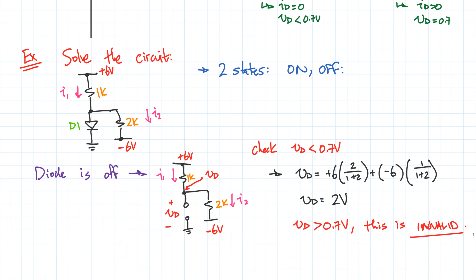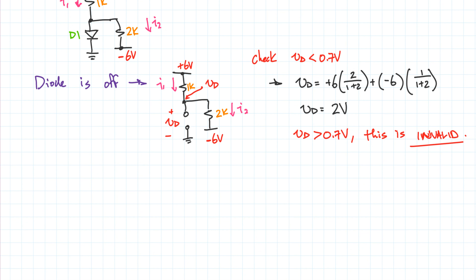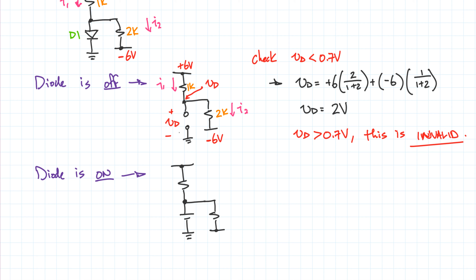Since assuming the diode is off is invalid, we now assume the diode is on. If it's not off, it must be on. When the diode is on, we redraw the circuit — I redraw the circuit every time because it makes everything clear and helps you track how the circuit changes. In more advanced circuits with changing conditions, having the most current version of the circuit is always a good idea. It takes only 10 to 15 seconds but saves a lot of trouble.